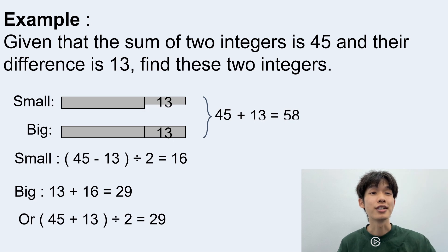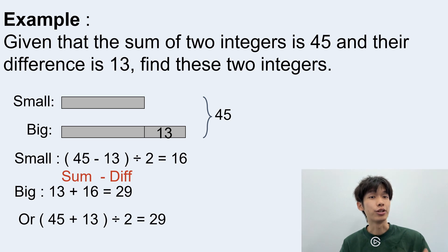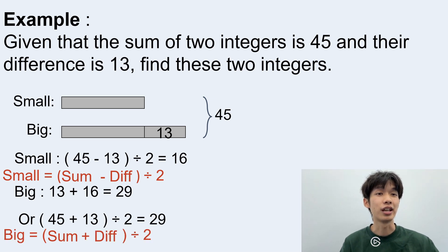And now let's do a summarize. So when we are trying to find the small number, what does this 45 mean? It means the sum. And what does this 13 mean? It represents the difference. So we can use the sum minus the difference and divided by 2, we can get the small number. And how about this big number? The other method we use is trying to use the sum. But here we try to plus the difference. And from here, we divide it by 2 to get the bigger number.